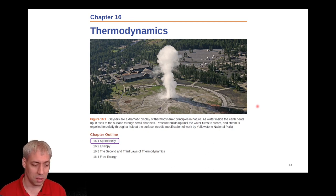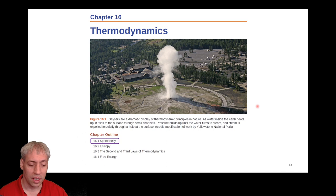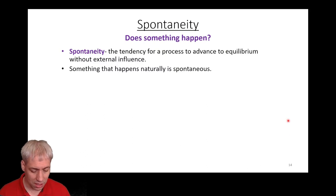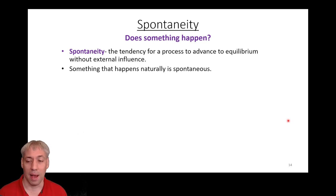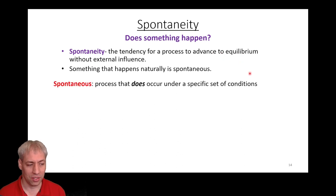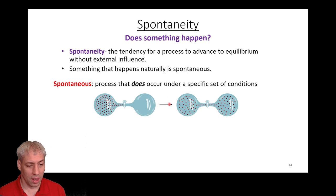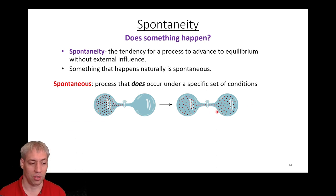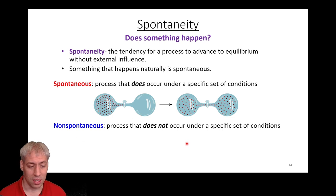Section 16.1 talks about spontaneity. We've established definitions about open and closed systems, heat, system and surroundings, and exothermic or endothermic — all of this builds toward determining spontaneity. Spontaneity is the biggest thing we want to know in any discipline: will something happen? A spontaneous process is defined as the tendency for a process to advance to equilibrium without external influence. Think about gas molecules in one side of a chamber: if you open the valve, spontaneously it fills both chambers.